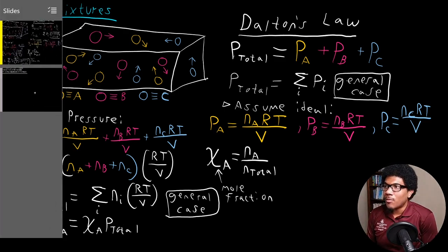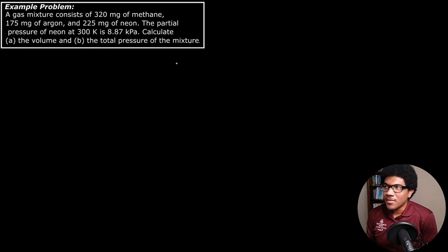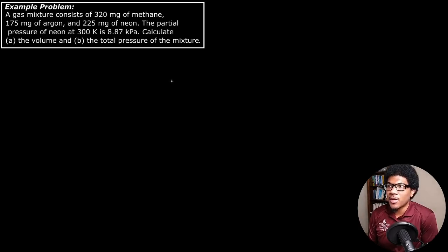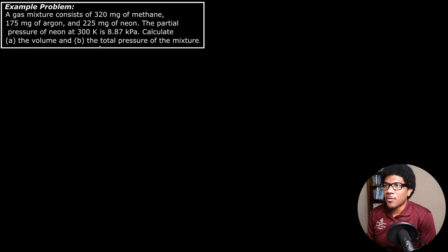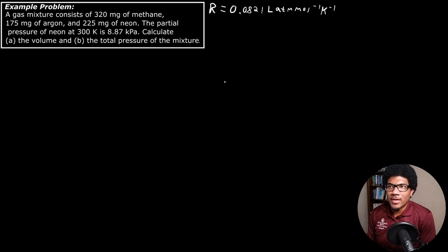Let's go through an example problem. A gas mixture consists of 320 milligrams of methane, 175 milligrams of argon, and 225 milligrams of neon. The partial pressure of neon at 300 Kelvin is 8.87 kilopascals. Calculate: A, the volume, and B, the total pressure of the gas. The gas constant R to be used is 0.0821 liter·atm per mole per Kelvin.